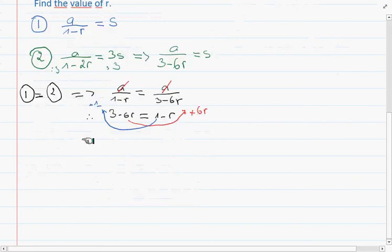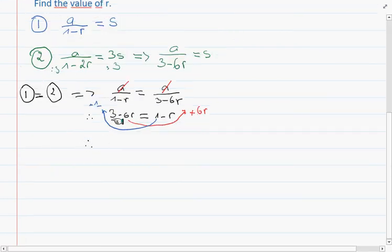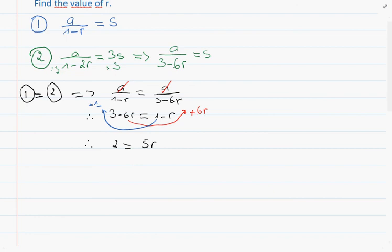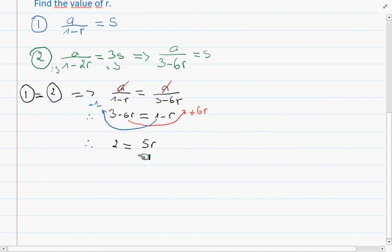Therefore we'll be having on this side 2 equals to 5r. Then we're going to divide by 5 on both sides. It's going to give us r equals to 2/5.